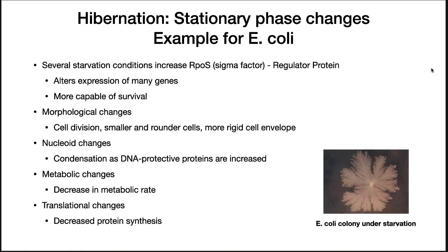An example of the hibernation approach is E. coli. Several different signals cause the microbe to turn on RpoS, a sigma factor. When RpoS activates, it alters expression of many genes, making E. coli more capable of survival. There are morphological changes such that cell division creates smaller and rounder cells that have a more rigid cell envelope. The nucleoid changes, condensing the DNA as the concentration of protective proteins increases — the cell is anticipating that it has to protect its DNA. Metabolic changes decrease the metabolic rate and protein synthesis also drops. All these changes make it more likely that the bacterium can survive until more nutrients become available.